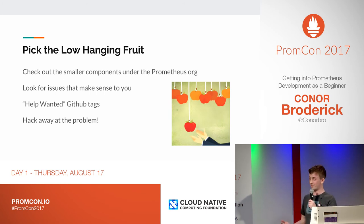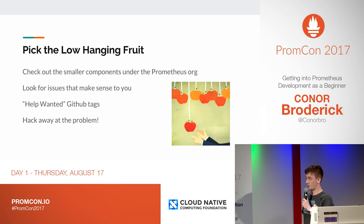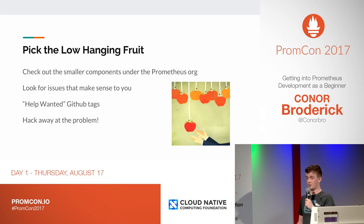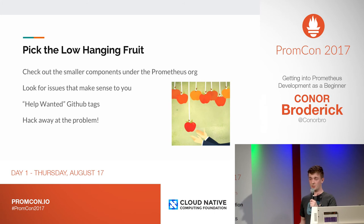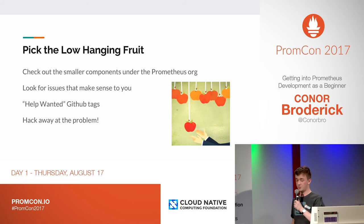So let's start with contributing code. When it comes to completing your first issue on GitHub, I'd recommend checking out the low-hanging fruit and help wanted tags. These issues tend to be the easiest ones to tackle initially and they're also the ones that the Prometheus team are actively looking for outside help for. So they will give you feedback, answer questions and help you out when you start pushing code for these issues.